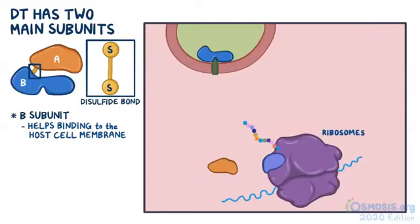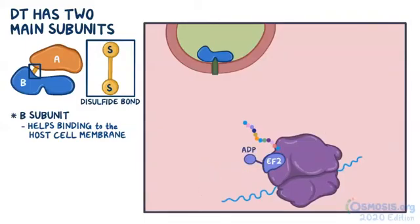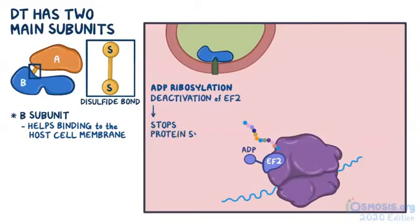Here it interferes with cell protein synthesis. This happens because the A subunit has an ADP-ribose group, which attaches to the elongation factor EF2, an important ribosomal protein that joins amino acids together during protein synthesis. This process is called EF2-ADP ribosylation, and it results in complete deactivation of EF2, which stops protein synthesis and leads to cell death.